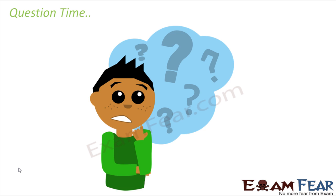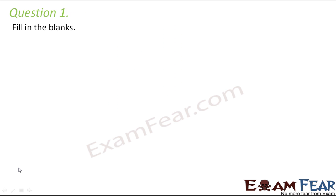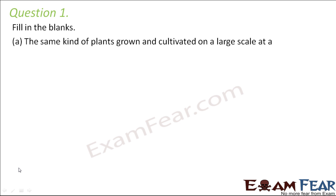Question number one, fill in the blanks: the same kind of plants grown and cultivated on a large scale at a place is called what? When we grow the same type of plant — instead of growing one tomato plant, if we grow thousands of tomato plants in a field — this is called a crop.